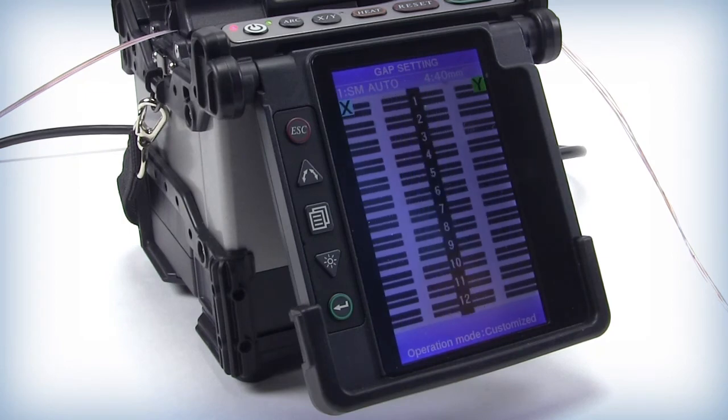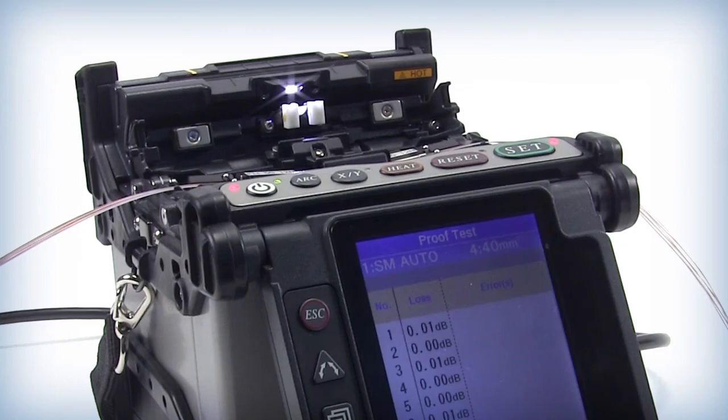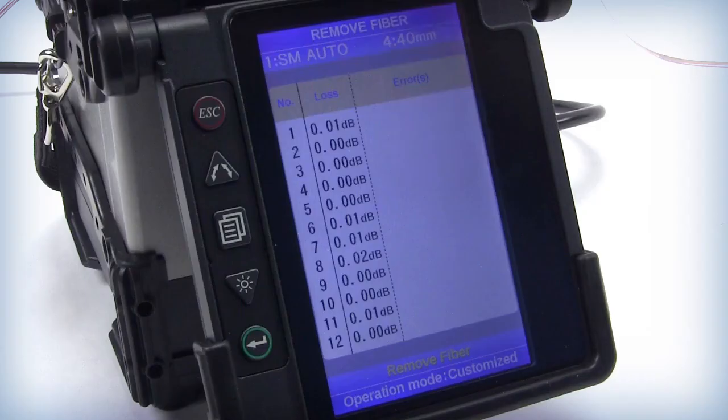Once the splice is completed, the 70R automatically opens the splice cover. Compare the splice results to local splice requirements. The mechanical strength of the splice has been tested by a proof test. If the splice has defects or does not meet the minimum loss requirements, the splice will have to be broken and the process repeated.